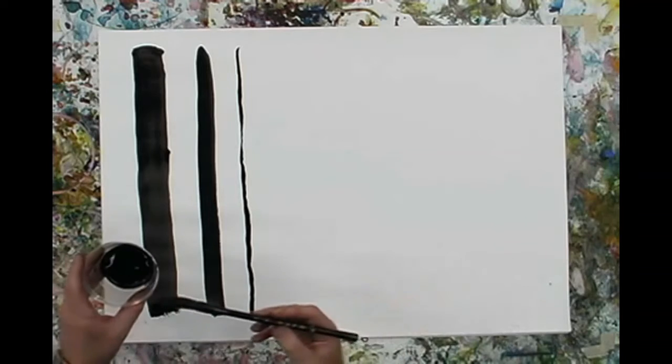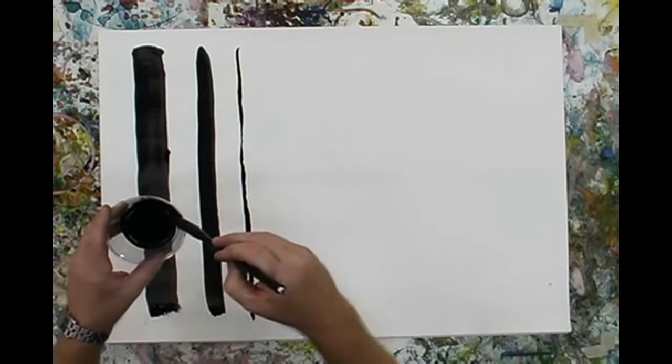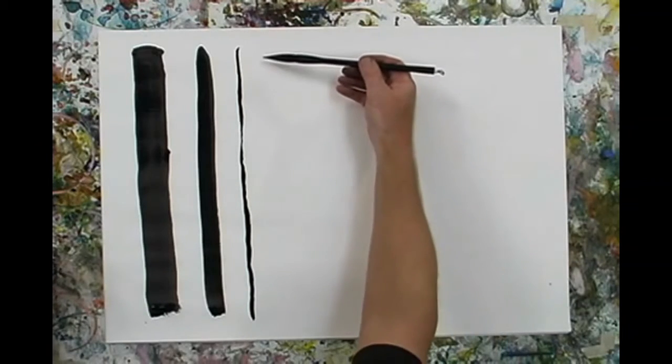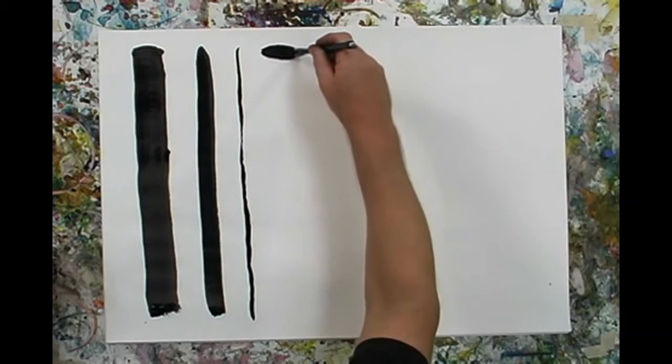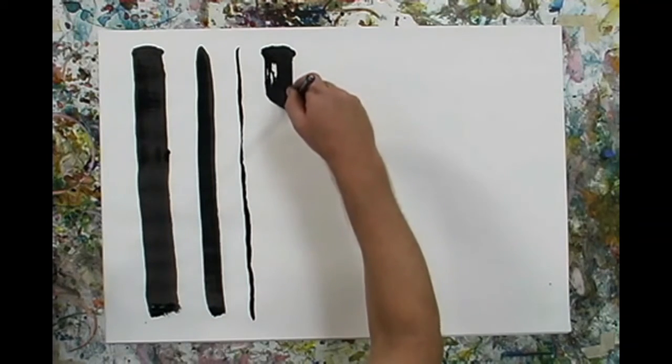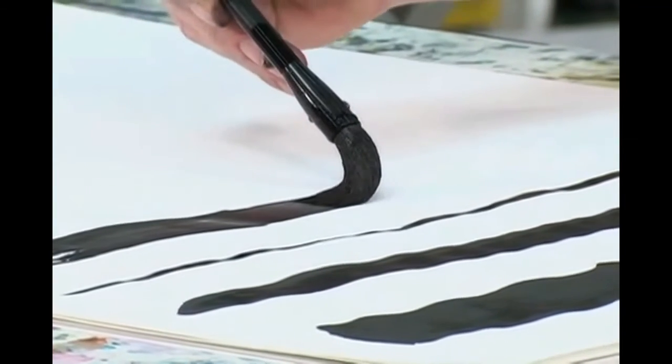Now just like I was showing you earlier with the crayon, we can do things where we twist the brush to get other variations. So I'm going to start wide. We're also getting a little bit of a dry brush effect coming in there, which is really nice.